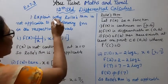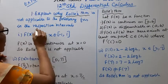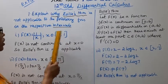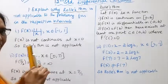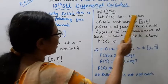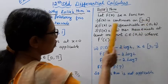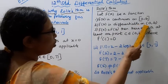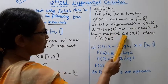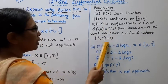Explain why Rolle's theorem is not applicable to the following functions in the respective intervals. Rolle's theorem is not applicable if: first condition — f(x) is continuous on closed interval [a, b]; second — f(x) is differentiable on open interval (a, b); third — f(a) = f(b). Then there exists at least one point c belonging to (a, b) where f'(c) = 0. That is Rolle's theorem.